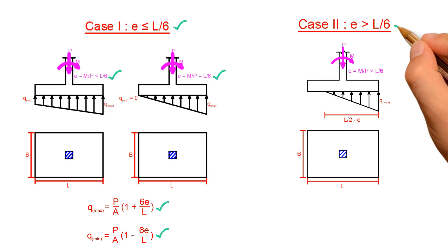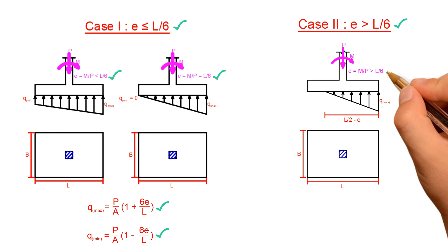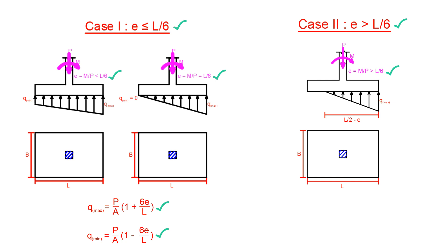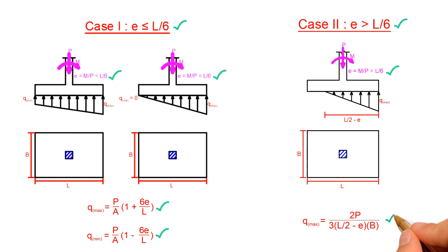For Case 2, if the eccentricity E is greater than L over 6, the soil pressure is triangular, and the formula is Q_max equals 2P divided by (3 times (L/2 minus E) times B).